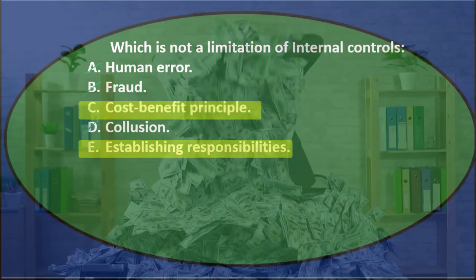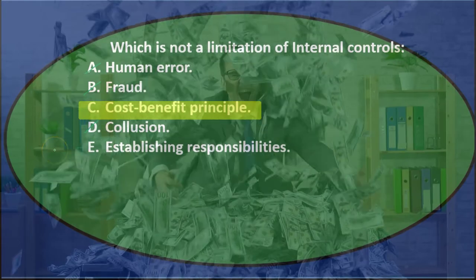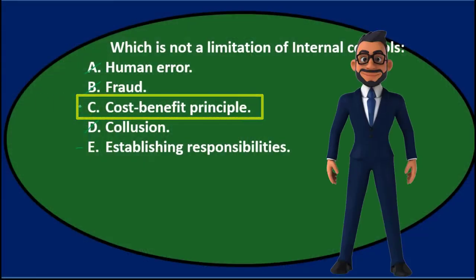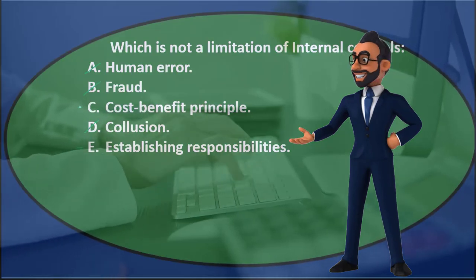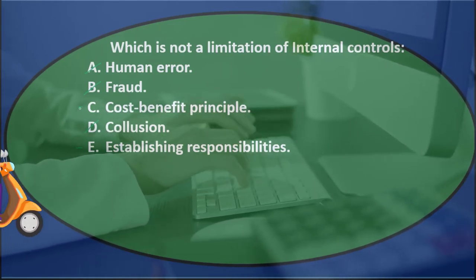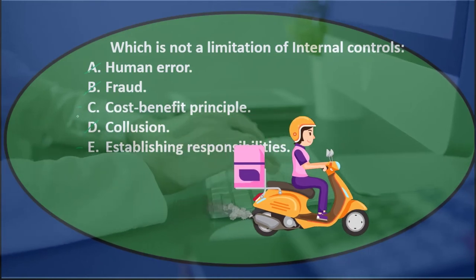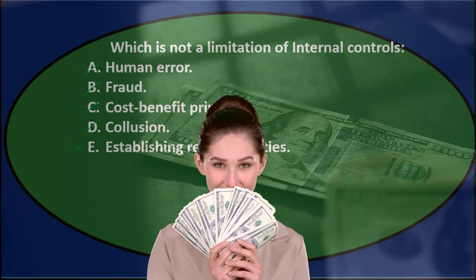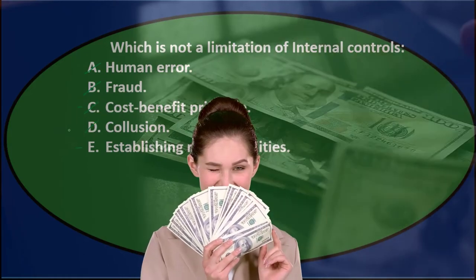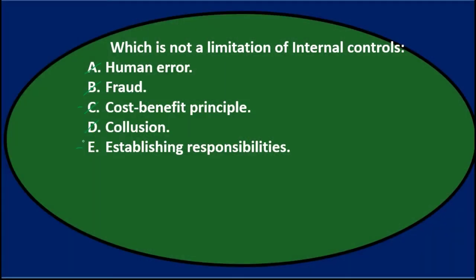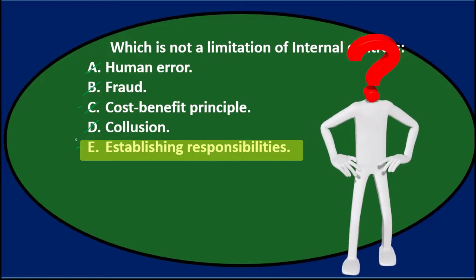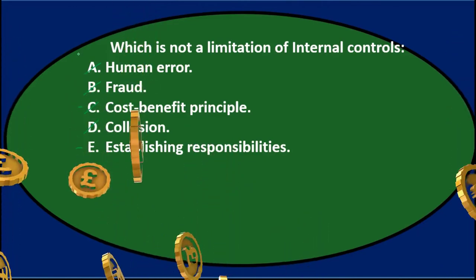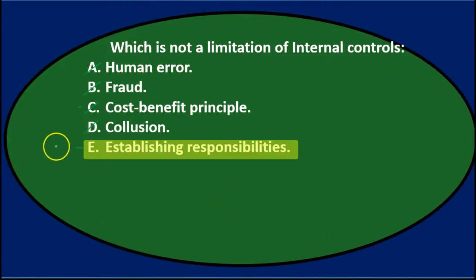Which is not a limitation? Either C, cost-benefit analysis, or E, establishing responsibility. C can be thought of as a limitation because we always apply cost-benefit analysis — we can never achieve perfect assurance because it would cost too much. Establishing responsibility is actually one of the procedures of internal controls, not a weakness. So the answer is E, establishing responsibility.